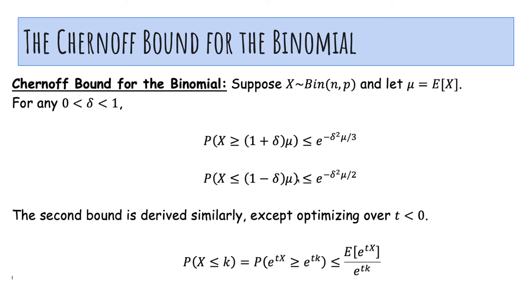And then you can actually derive this other bound, which is the probability x is less than, you know, 10% of its mean or something, for delta between 0 and 1, optimizing over t less than 0 instead of t greater than 0.